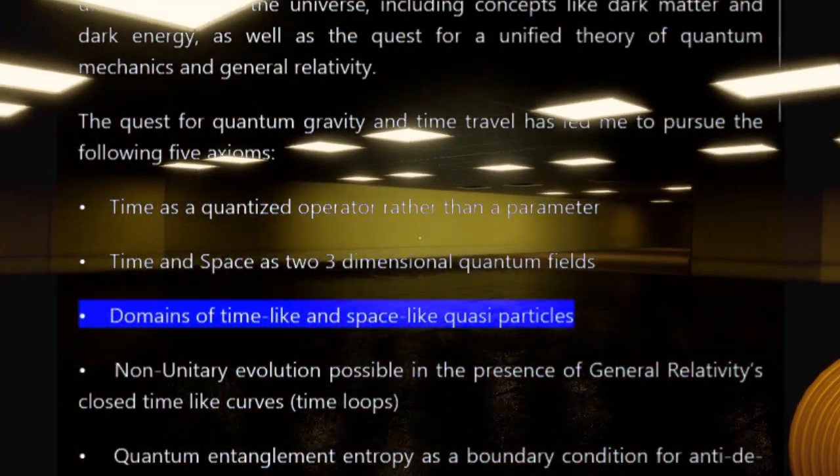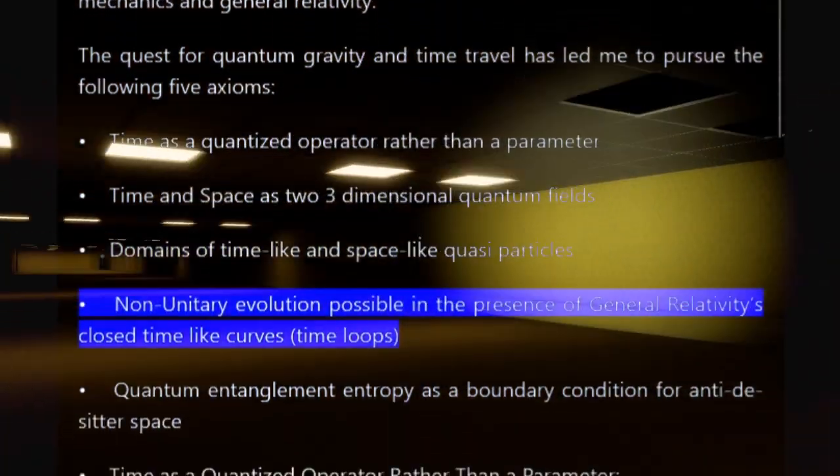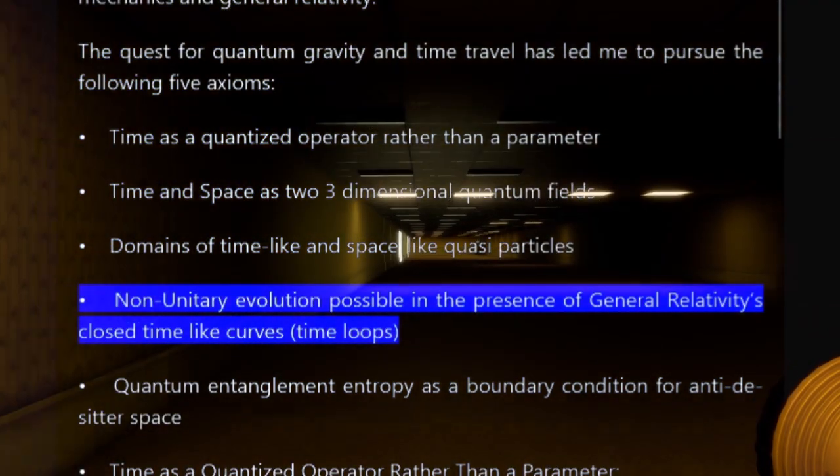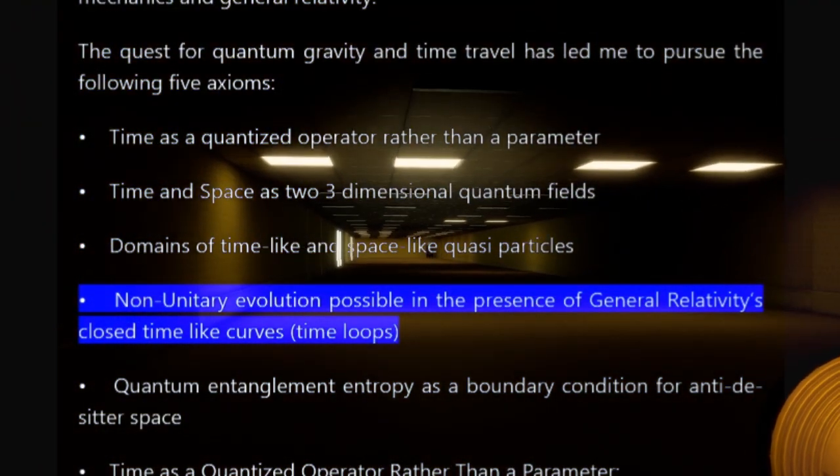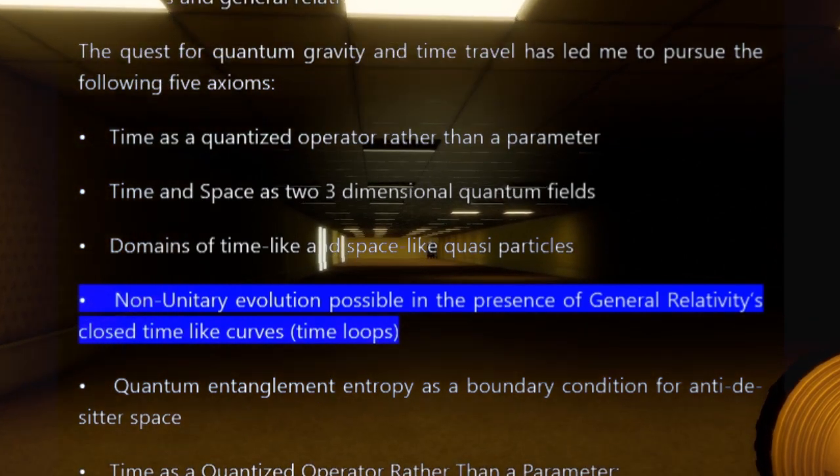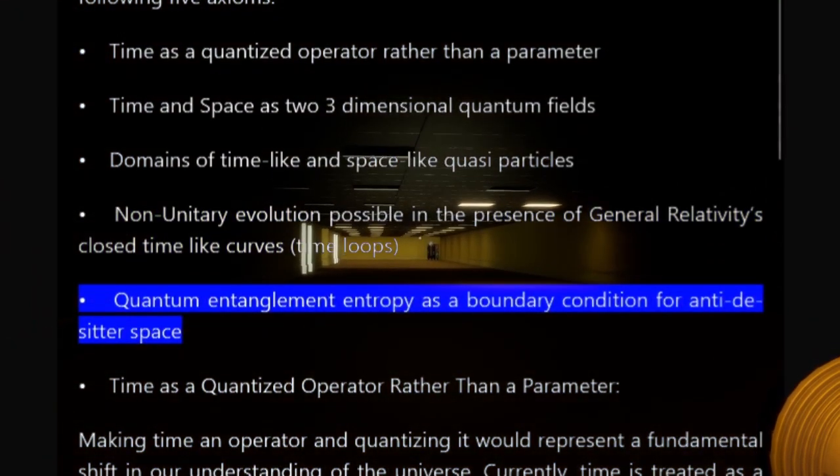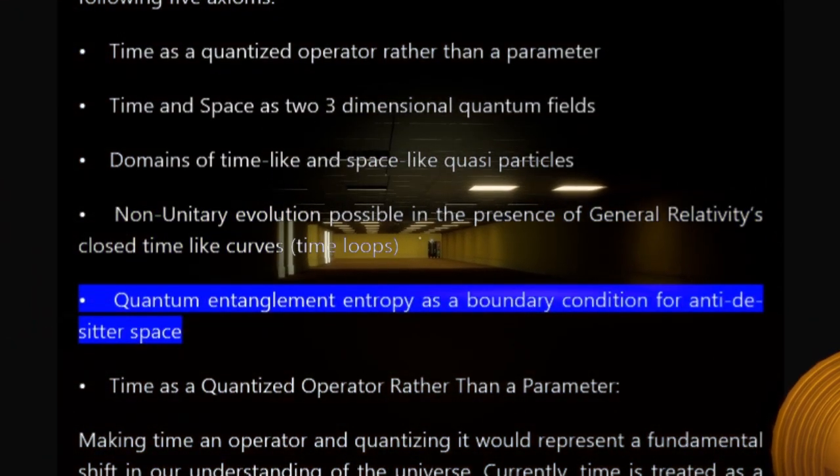Domains of time-like and space-like quasi-particles; Non-unitary evolution possible in the presence of general relativity's closed time-like curves, time loops; Quantum entanglement entropy as a boundary condition for anti-de Sitter space.